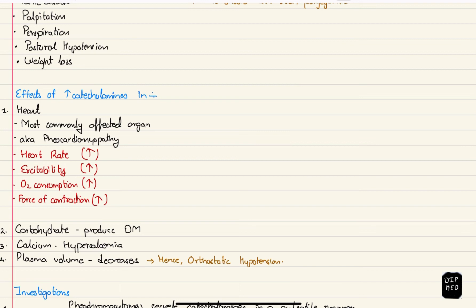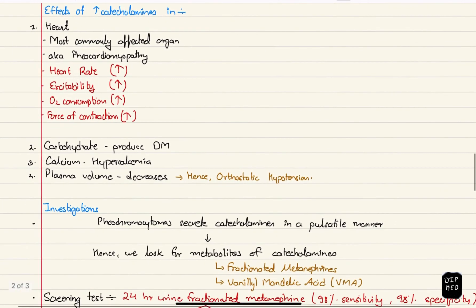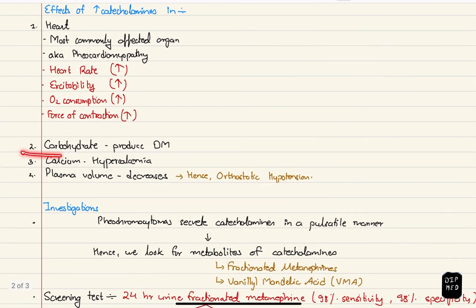The effect on the heart is increase in heart rate, increase in excitability, oxygen consumption increases and force of contraction also increases. Carbohydrate metabolism might be affected causing diabetes mellitus. The effect in calcium metabolism causes hypercalcemia and lastly the plasma volume decreases hence there is orthostatic hypotension.